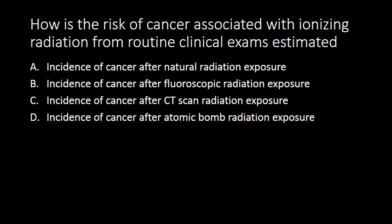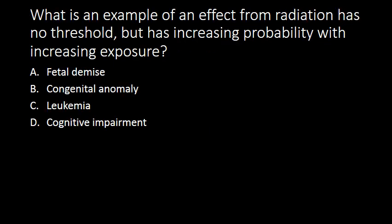How is the risk of cancer associated with ionizing radiation from routine clinical exams estimated? We are estimating the incidence of cancer based on atomic bomb survivors, and it's unclear whether that is a perfect model, but it is the best model that we have. What is an example of an effect from radiation that has no threshold and has increasing probability with increasing exposure? Leukemia is considered a stochastic effect from exposure to ionizing radiation, while the other answer choices are considered deterministic effects.